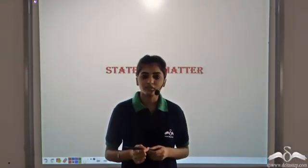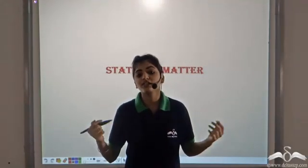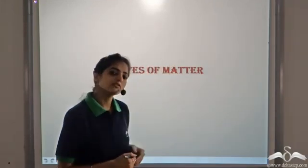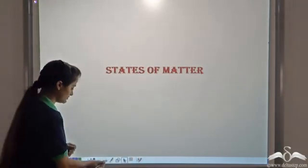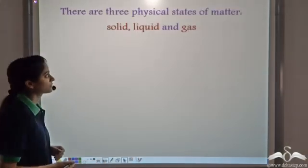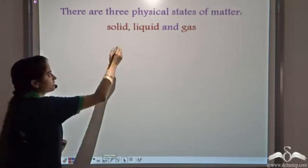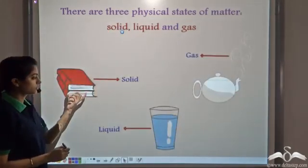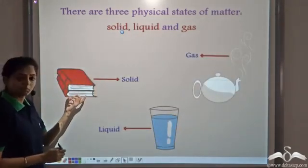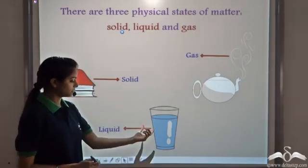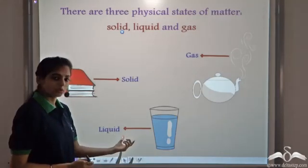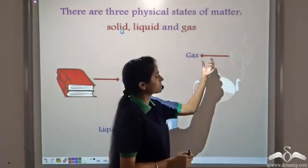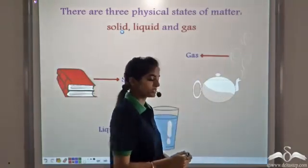So far we have seen what is matter and that everything around us is matter. Let's see the different states of matter now. The three physical states of matter are the solid state — a book is an example of a solid state — the liquid state, water is an example, and the gaseous state, like the steam coming out of a hot teapot.